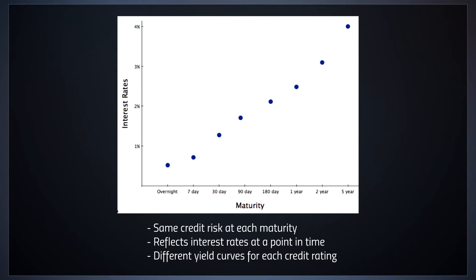This is for one credit rating. So we have a yield curve for government-issued debts, and we have a yield curve for different corporate credit ratings. Those can tell you a lot about the credit spread, how the market is looking at the economy, the risks they think are out there, as well as the overall economic outlook.